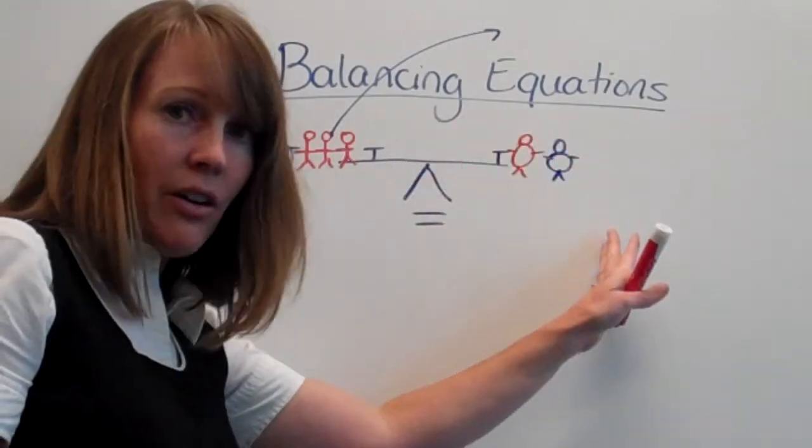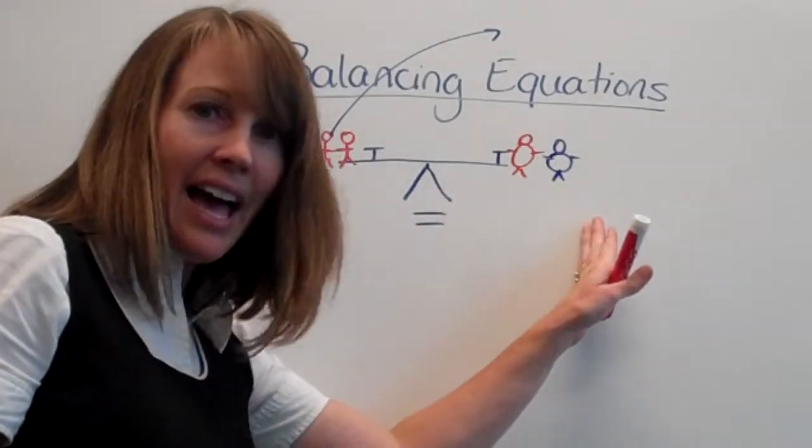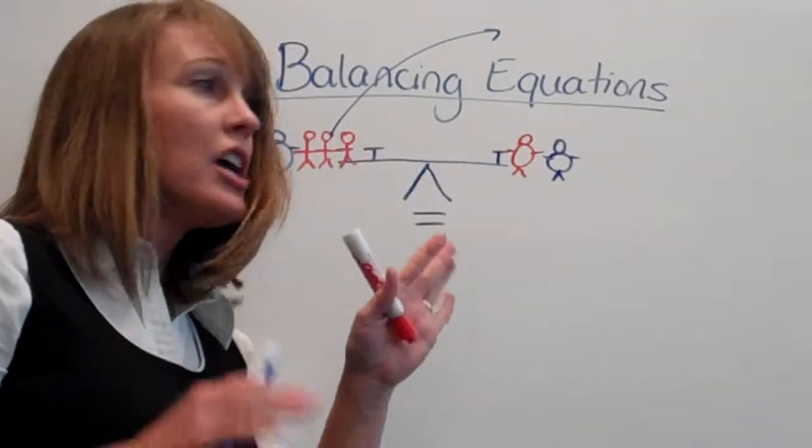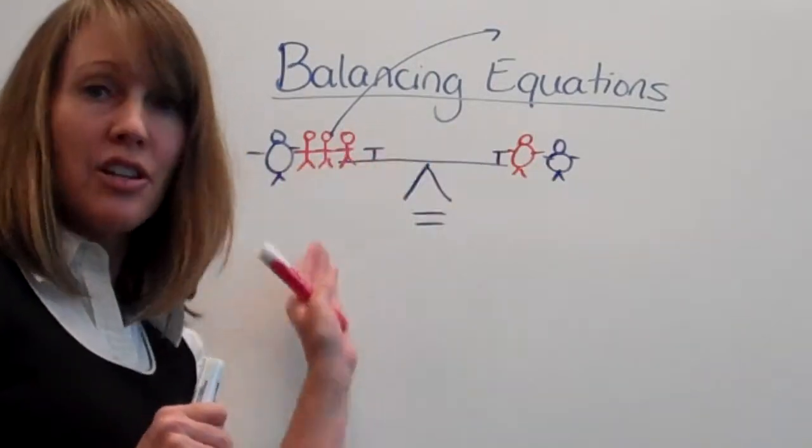If I add 500 pounds here, I've got to add 500 pounds here. If I divide it in half, I've got to divide it in half here. You've got to keep it balanced. So what I do to one side of the equation, I do to the other.